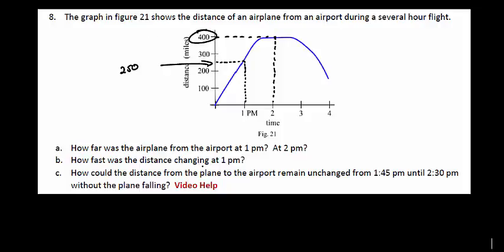Now how fast was the distance changing? Well the change in distance over some unit of time, that's what we call speed or velocity. So at 1 p.m. the question is how fast were we moving? Well that's the slope of the tangent line. So the question is what is the slope of this line?